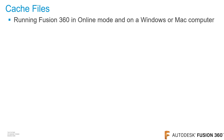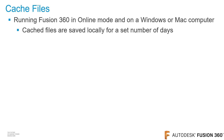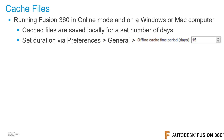Now I'll discuss cached files. When Fusion 360 is running and in online mode on a Windows or Mac computer, every time you save a file, that file is also saved locally and stored for a set number of days. You can set this duration by going to your preferences, and in the general section, change the number of days in the offline cache time period days option.